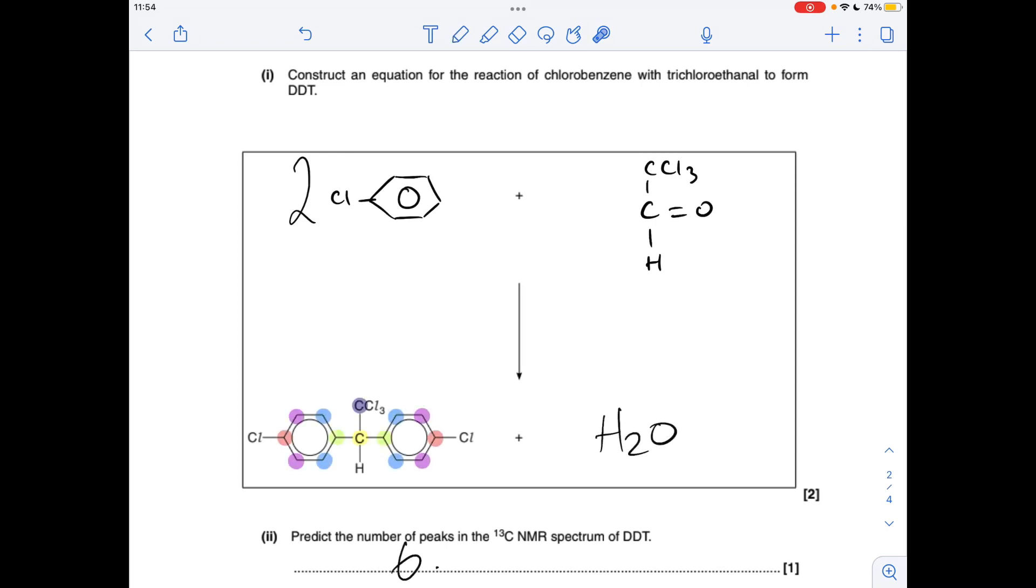Number of peaks in the carbon-13 NMR spectrum of DDT is going to be six, so I've colour-coded all the different carbon environments. So we've got some symmetry in the molecules, so they're equivalent to each other. These two are equivalent to those two.